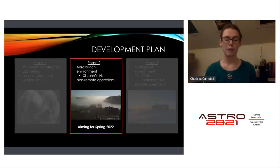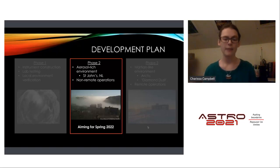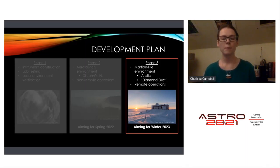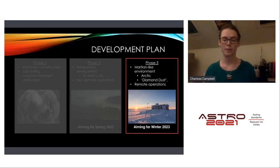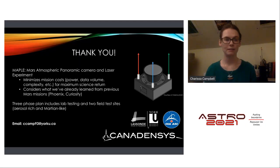In Phase 2, targeting spring 2022, we plan to go to an aerosol-rich environment such as St. John's, Newfoundland with thick fog, to test MAPLE with different types of volatiles and larger particle sizes rather than going straight to the very thin Martian particles. This will be a non-remote operation where we take MAPLE ourselves. In Phase 3, targeting winter 2023, we'll test in an Arctic environment where diamond dust — very thin particles similar to Martian water ice particles — exists. This phase will include both on-site and remote operations, testing remote use from York University up to the Arctic.